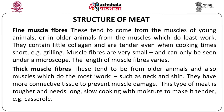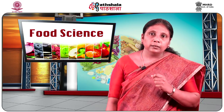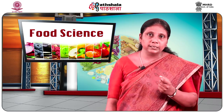Fine muscle fibers are very small and can only be seen under a microscope, and the length of the muscle fiber also varies. Thick muscle fibers come from older animals and from muscles which do the maximum work, such as the neck and shin. Thick muscle fibers have more connective tissue to prevent muscle damage. This type of meat is tougher and needs long slow cooking with moisture to make it tender. Only moist heat methods of cooking are suitable for thick muscle fibers, and the most appropriate method is the casserole.